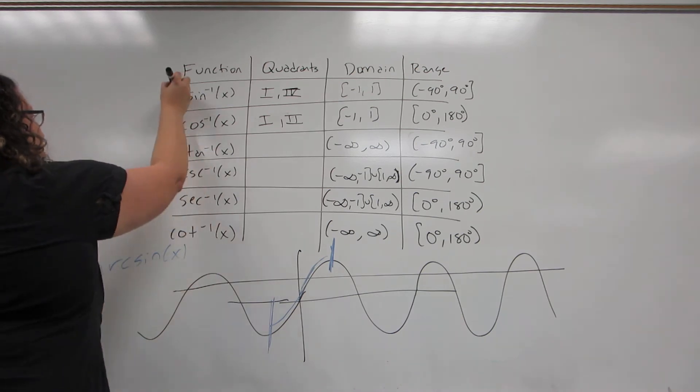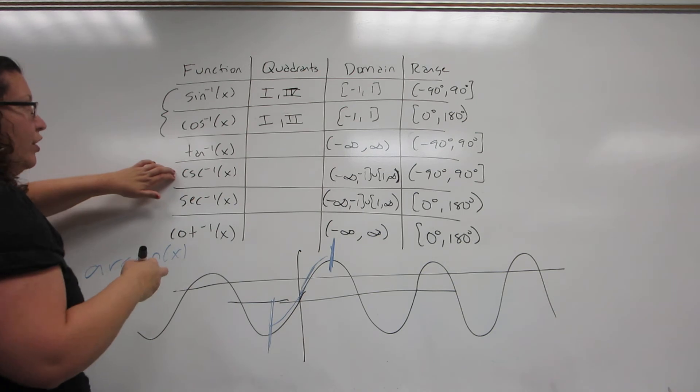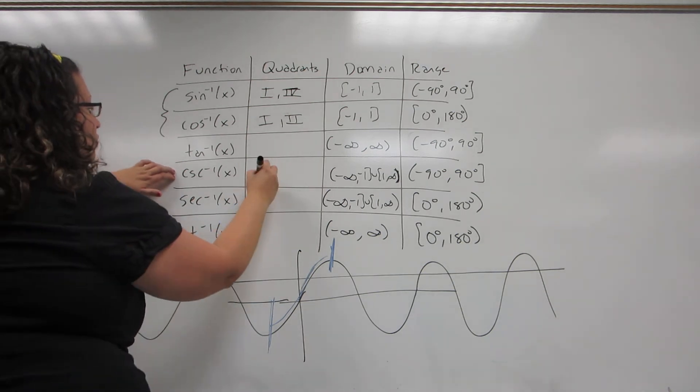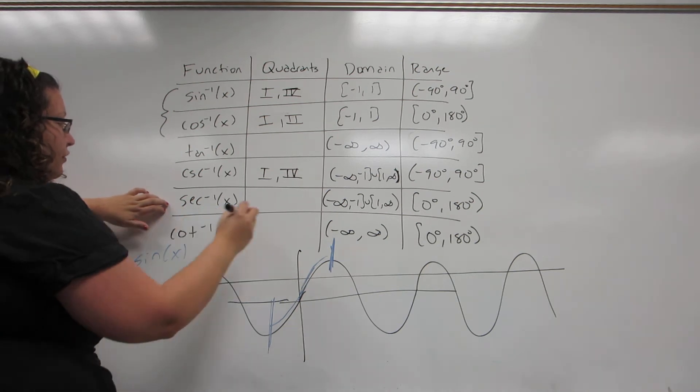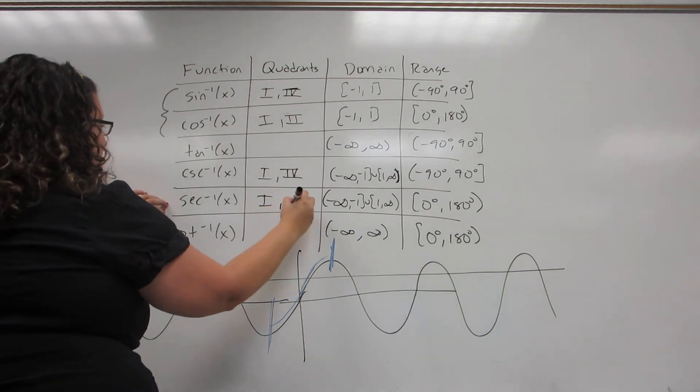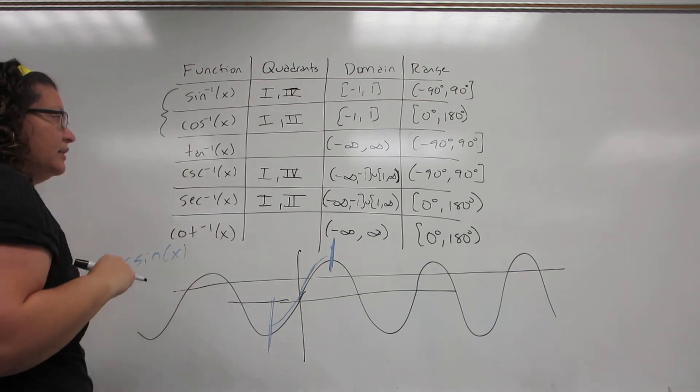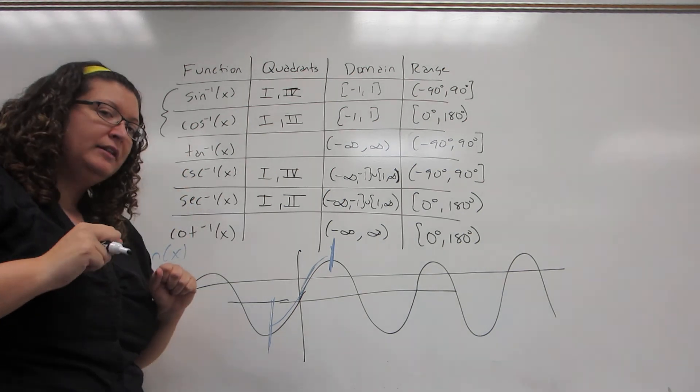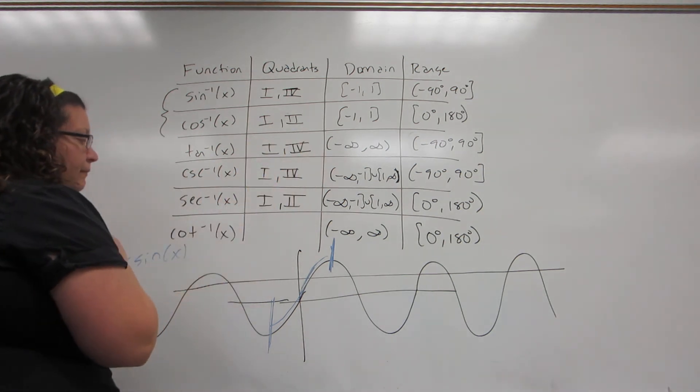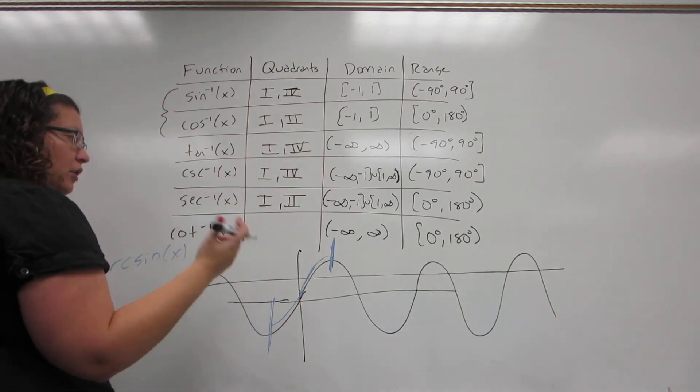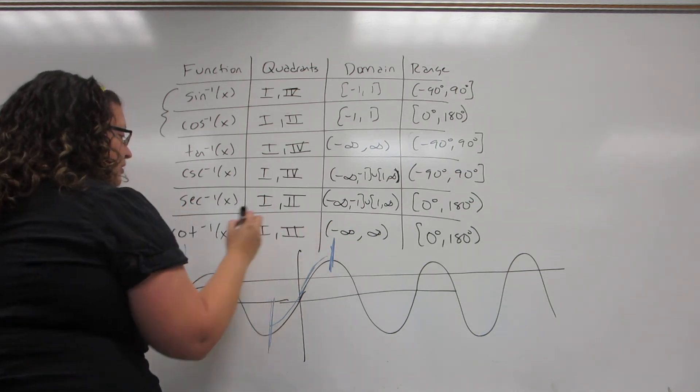Now, once you know these two, you get all the rest for free. Cosecant is 1 over sine, so it will have the same quadrants as sine. Secant is 1 over cosine, so it will have the same quadrants as cosine. Now, tangent is sine over cosine. The sine is on top, so it's most important. So it's going to be the same as sine. Cotangent is cosine over sine, cosine's on top, so it's going to be the same as cosine.